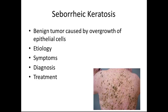Seborrheic keratosis is a benign tumor caused by the overgrowth of epithelial cells. The etiology is unknown and appears to be age-related, typically occurring in geriatric patients. Symptoms are tan, brown, or black growths with well-defined borders; sometimes they are warty, dry, and rough. Diagnosis is by observation. Treatment is generally not necessary as they are harmless, but if irritating to the patient, they can be skin-scraped for removal.